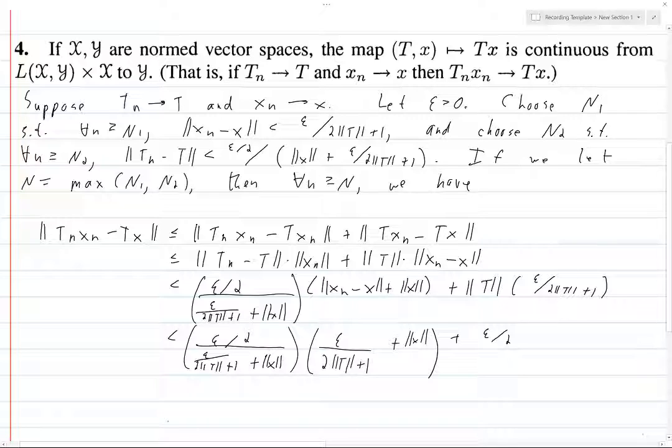But now we see this denominator here is exactly what we have up here. And so this is actually equal to epsilon over 2 plus epsilon over 2, and that is equal to epsilon.